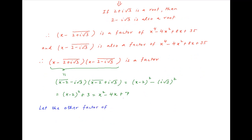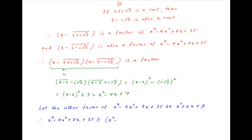Now let the other factor of x⁴ - 4x² + 8x + 35 be x² + αx + β. Therefore, x⁴ - 4x² + 8x + 35 can be written as (x² - 4x + 7) multiplied by (x² + αx + β).